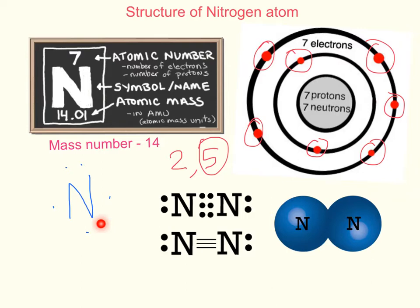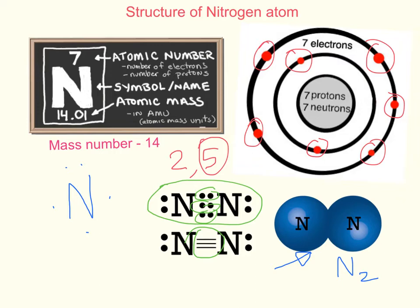These three unpaired electrons take part in chemical reactions. Nitrogen exists as a diatomic molecule in nature, so it is written as N₂ — two nitrogen atoms bonded together. Here is the bonding diagram for a nitrogen molecule. The three unpaired electrons form a triple covalent bond, which is one of the strongest bonds found.